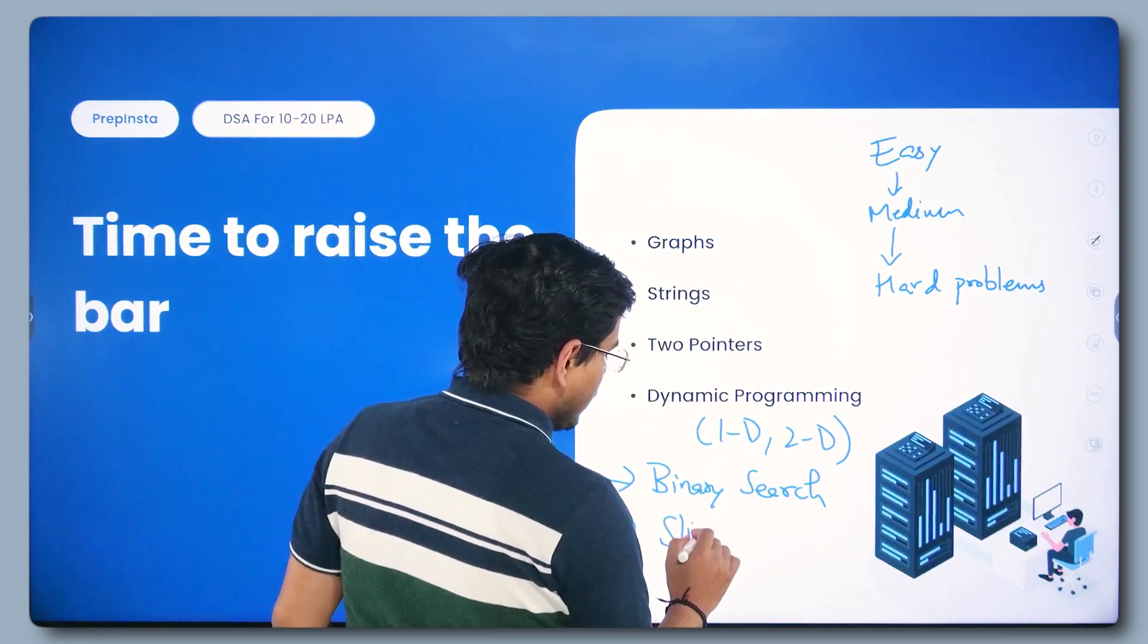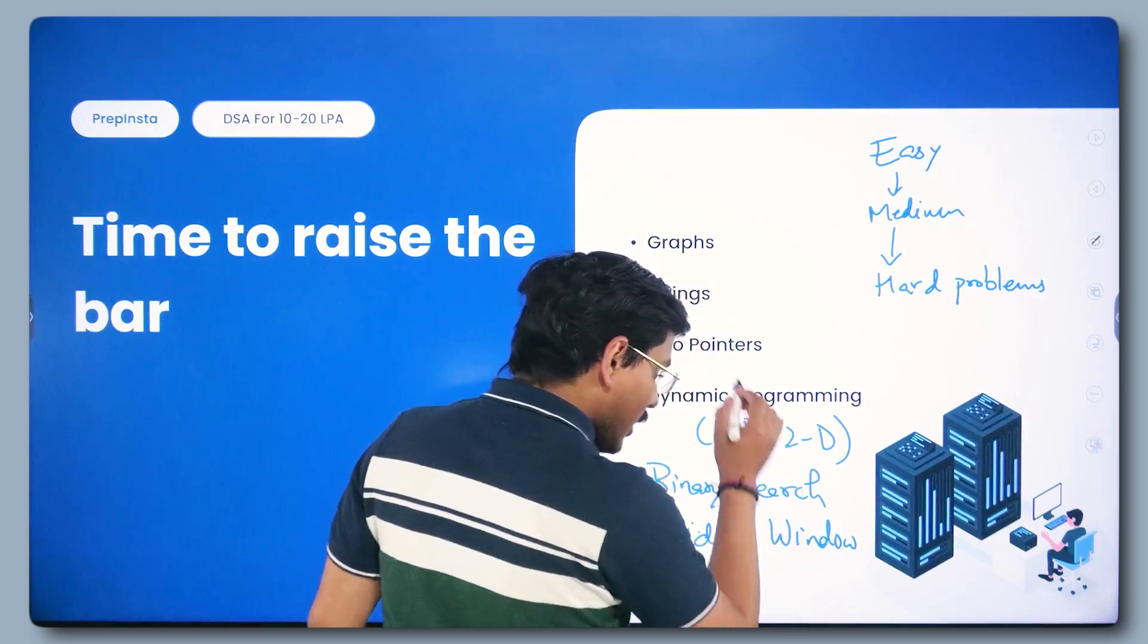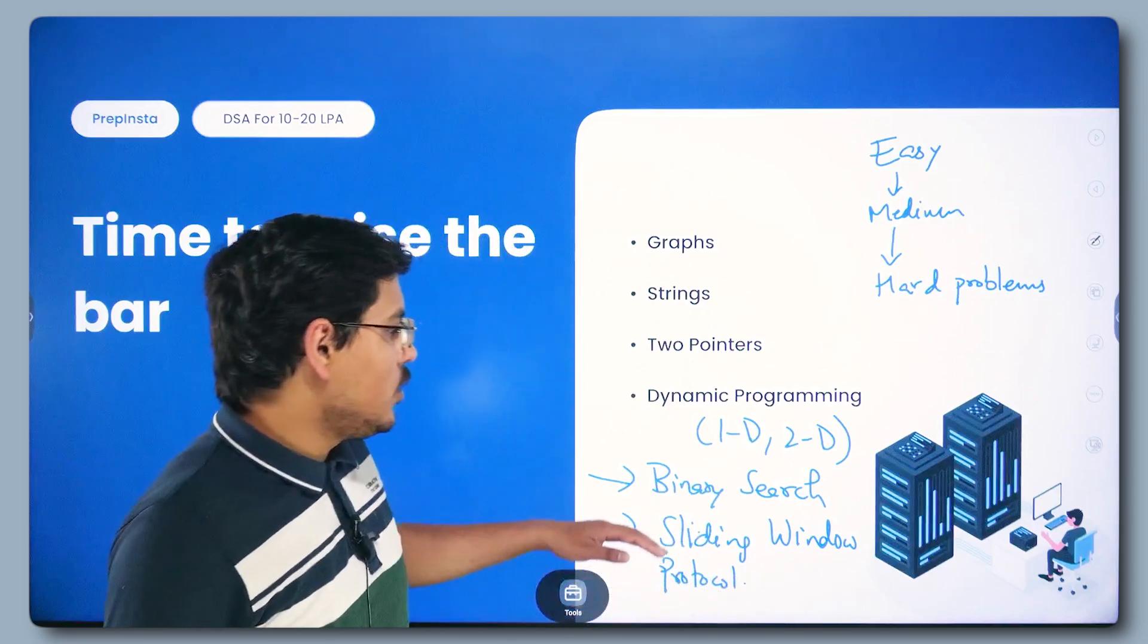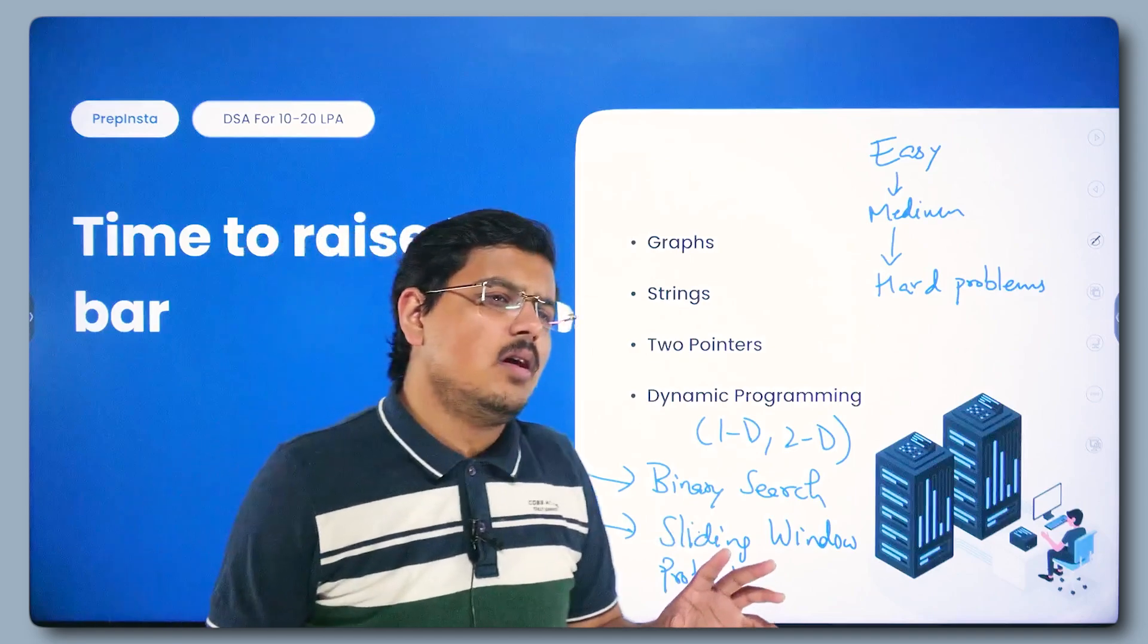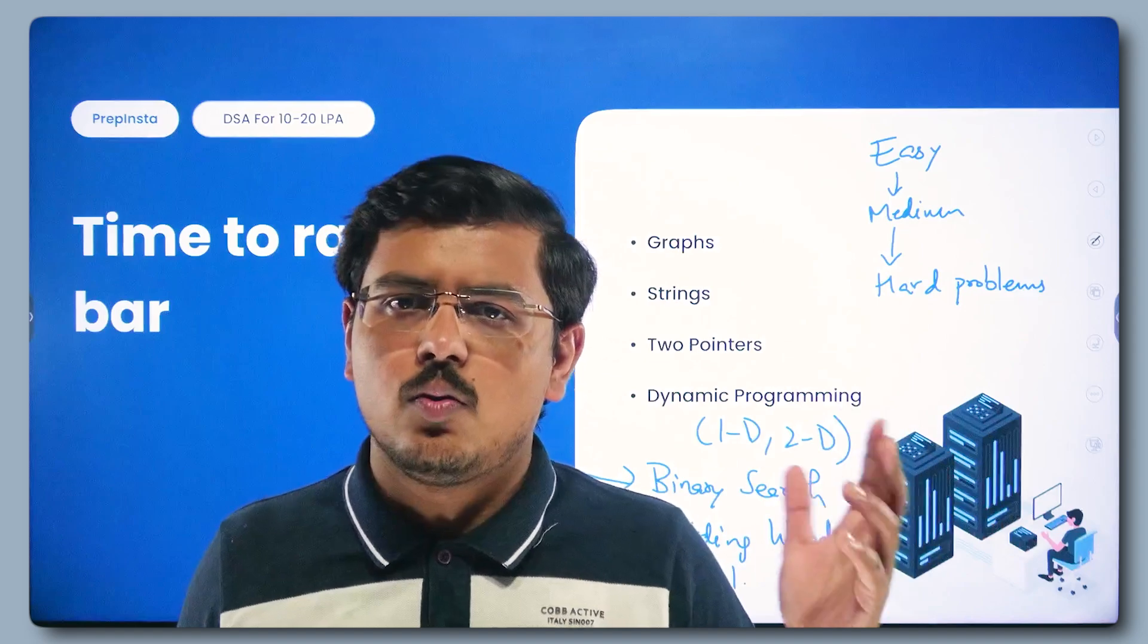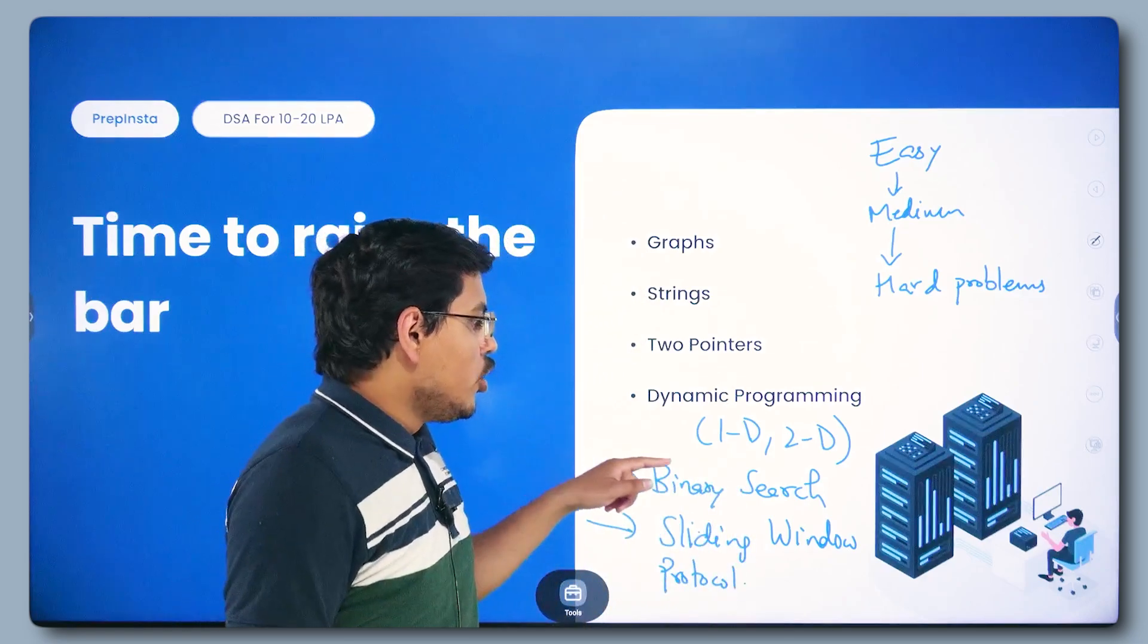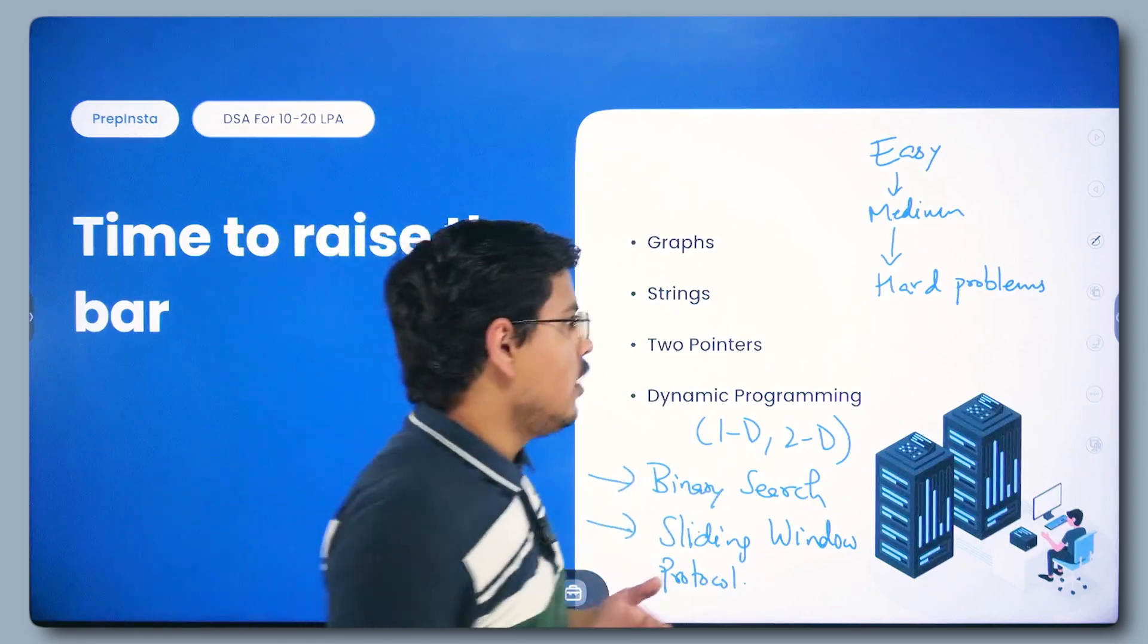Once this bunch is complete, two things that you should focus more upon is one is binary search. When you find time after this, solve questions for binary search and for sliding window protocol. However, let me tell you why am I writing them separately. The reason is for 10 to 20 LPA you can skip sliding window protocol. Usually it is not asked, one in a million case. But binary search is often asked.